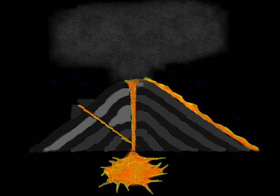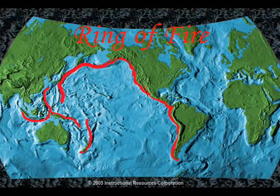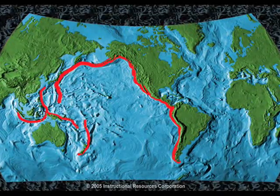A volcano is an opening in the earth's crust through which gases, molten lava, and ashes are thrown forth. Volcanoes can form on land or on the ocean floor. Most volcanoes are found where two plates meet, and most active volcanoes are found on the Ring of Fire.